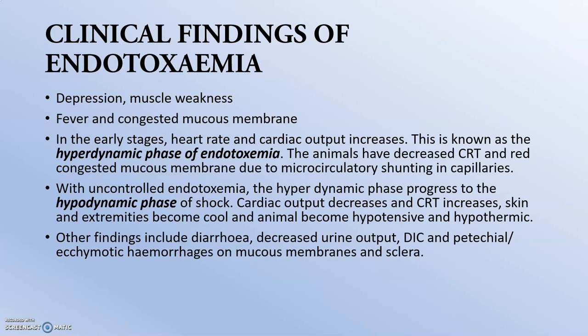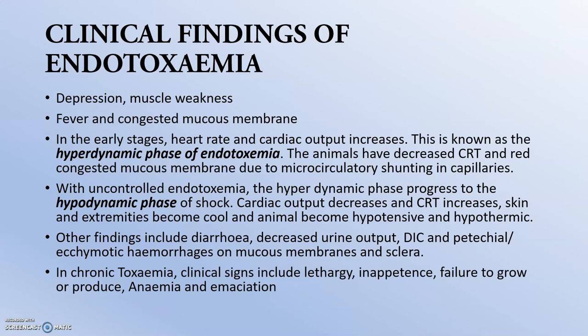Petechial or hemorrhagic hemorrhages on the mucosal membrane and sclera may be present. In chronic toxemia, we may progress to acute or chronic renal failure, and the animal will mainly exhibit chronic renal failure, anemia, and emaciation.